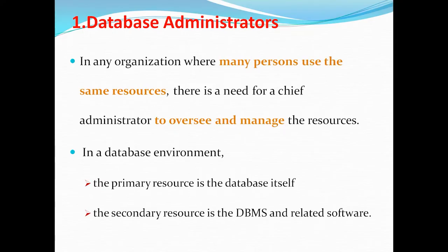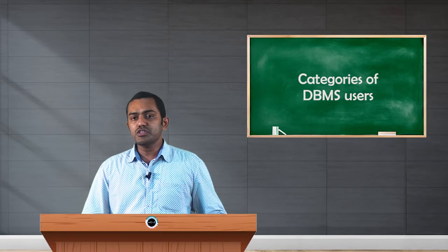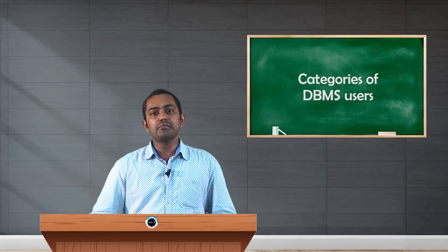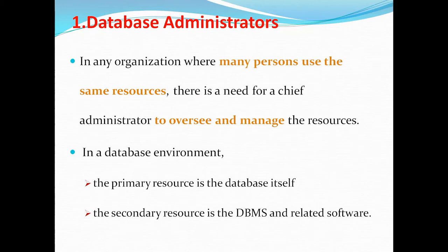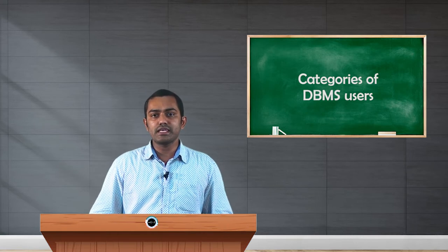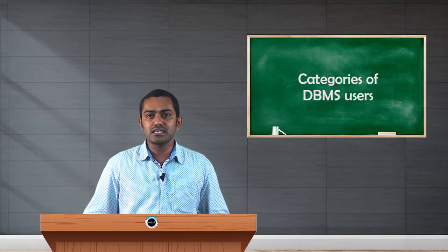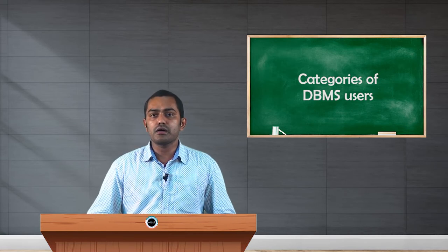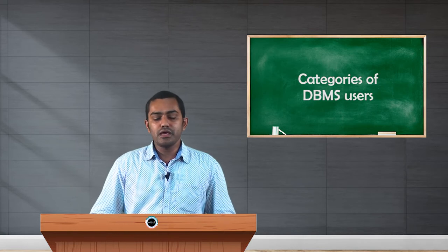In a database environment we have two types of resources: first, the database itself, and second, the DBMS. The database is the primary resource. The database management system uses a set of applications or programs to access the database — we can define, manipulate, and update the data. To perform all those tasks with different users, someone is needed to manage, control, and oversee these tasks. The person who monitors all those tasks is considered the database administrator.